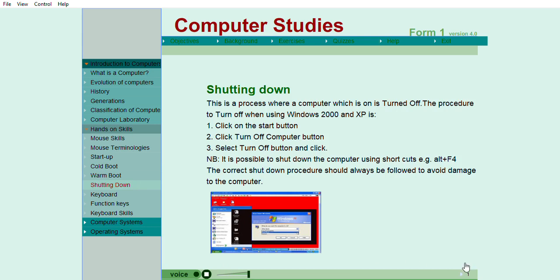Shutting down: This is the process where a computer which is on is turned off. The procedure to turn off is: Click the start button. Click shut down. Select the shut down the computer option by clicking on it. Click the yes button to confirm your selection. Never just switch off your computer. You may lose unsaved information and damage your computer's hard disk.